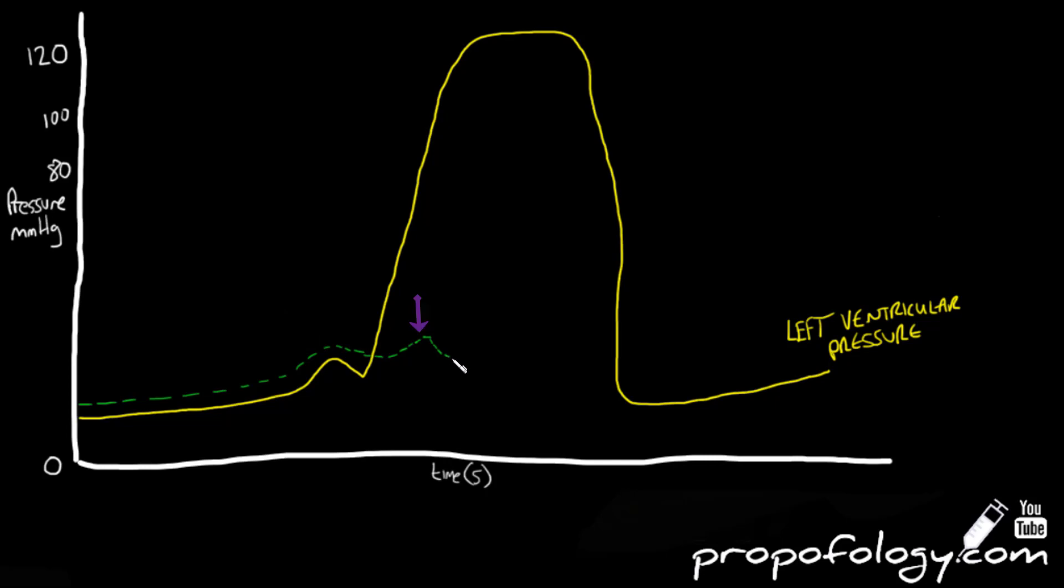You can see a second increase in pressure just after this, and this is because the ventricles are contracting and cause the atrioventricular valves to bulge back into the atria, therefore increasing pressure transiently. It subsequently falls as the blood in the ventricles leaves and goes elsewhere in the body, reducing that bulge and therefore the pressure.